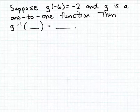And we want to use this information to find a matching input-output pair for the inverse of the function g, denoted by g with a superscript of minus one.